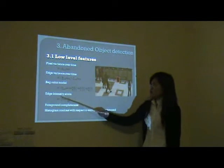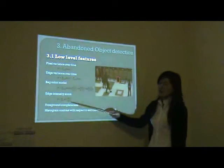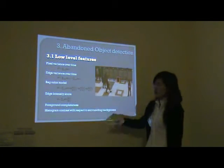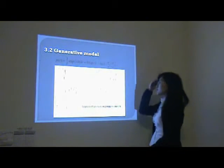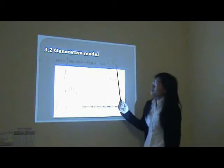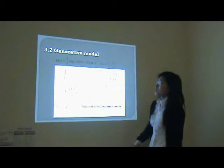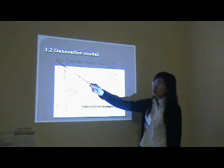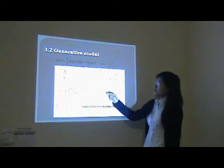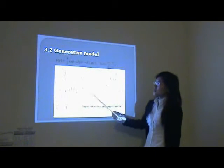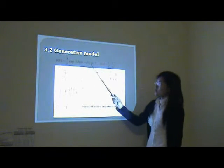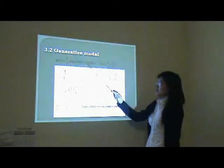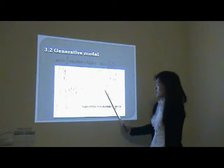The edge intensity score is defined as the KL divergence of the edge intensity between the candidate regions and the whole image. For the above features, we assemble them to construct a generative model. For each feature, its probability distribution is defined by a formula, and its likelihood ratio with respect to the negative distribution is modeled by the Sigmoid function. This is the regression result from the Sigmoid function.